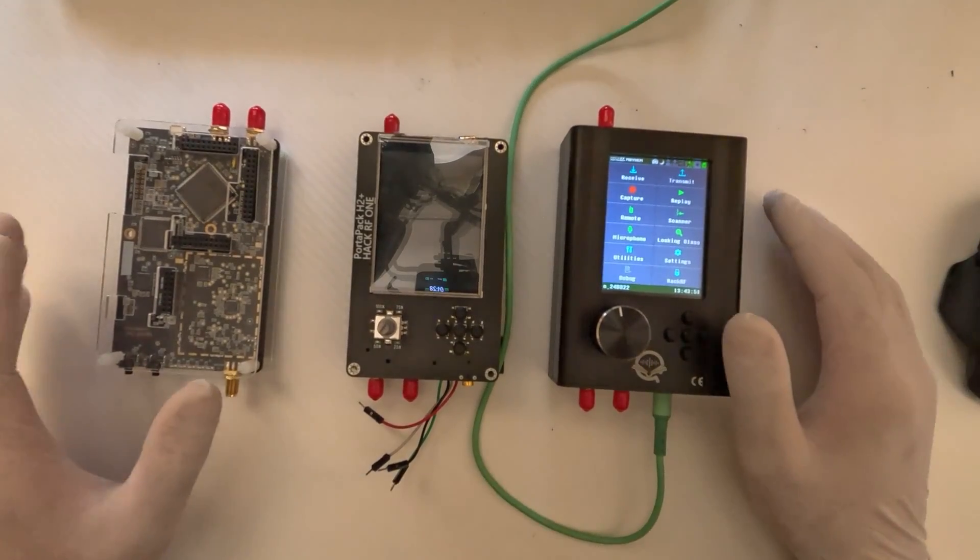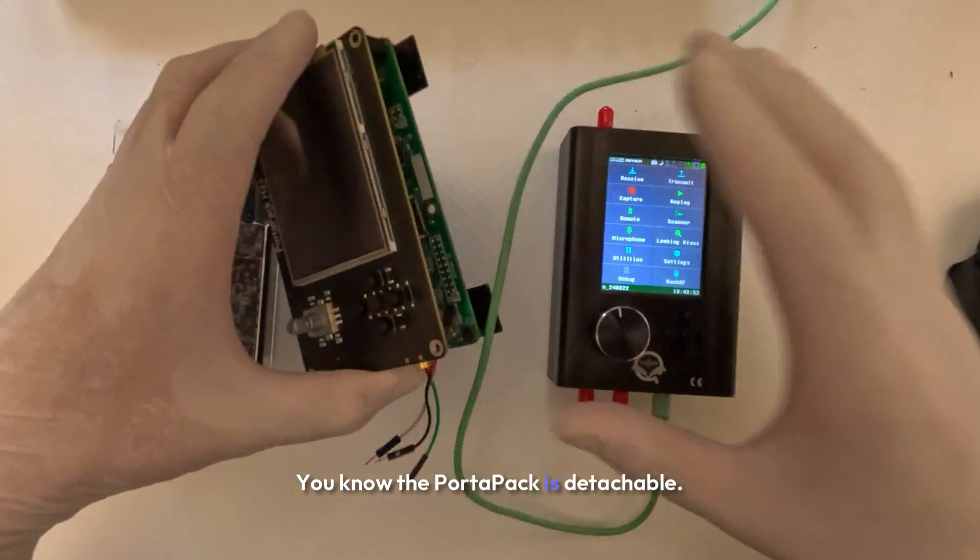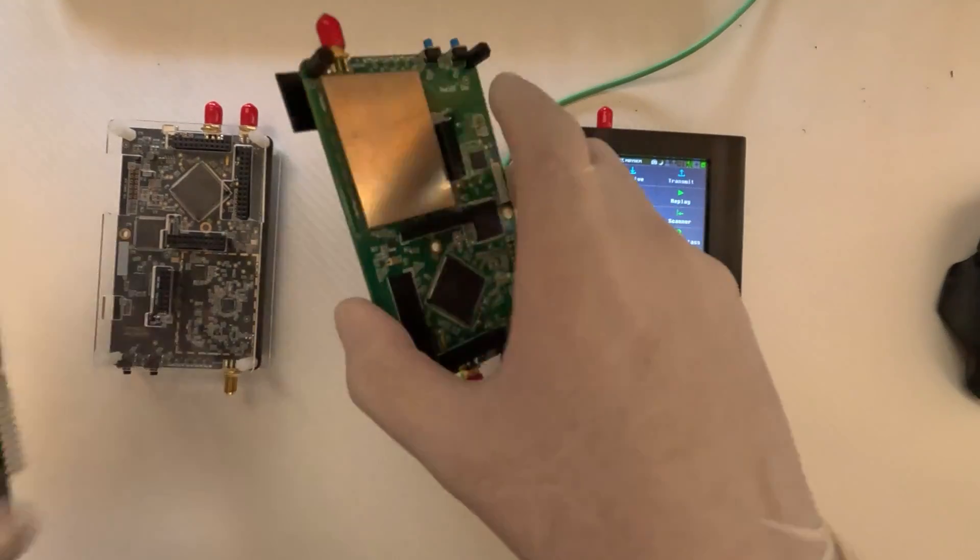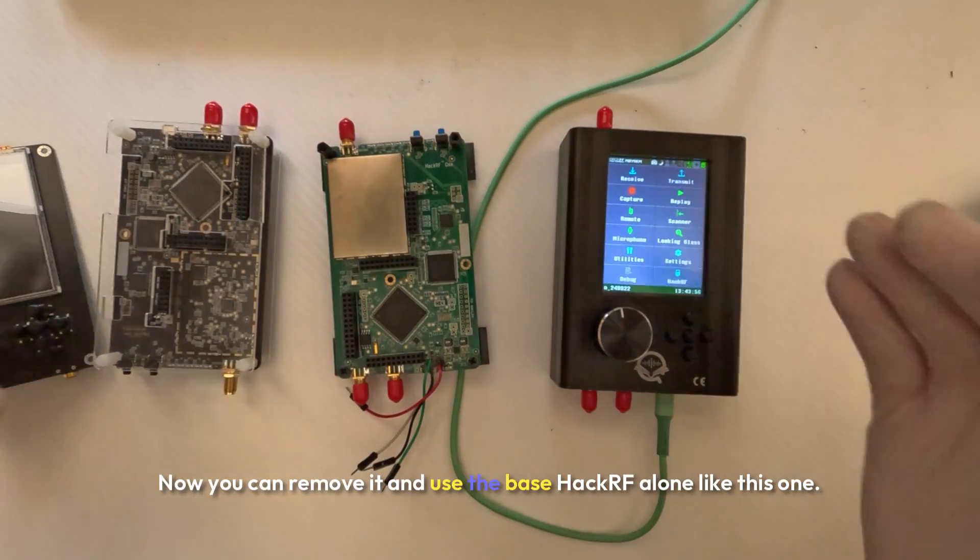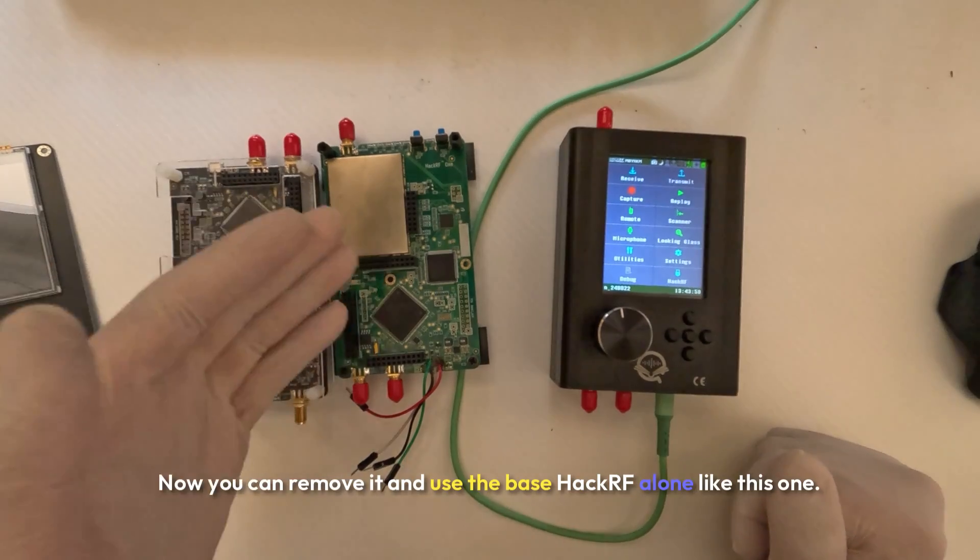Now that's an important point. You know the Portapack is detachable. You can remove it and use the base HackRF alone, like this one.